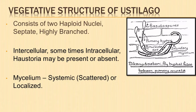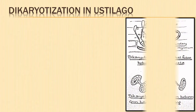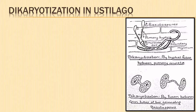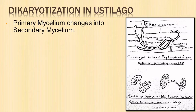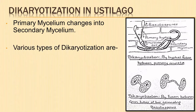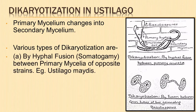Let us learn about dikaryotization in Eustilago. It is a process in which the primary mycelium produced by the germination of basidiospores changes into a secondary mycelium. There are various methods of dikaryotization in Eustilago. Dikaryotization may take place within the host by means of hyphal fusions — somatogamy — between hyphae of opposite strains, as seen in Eustilago maydis.